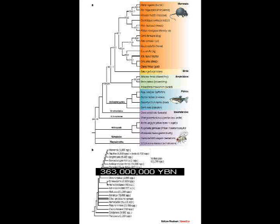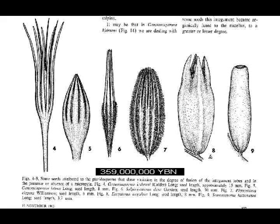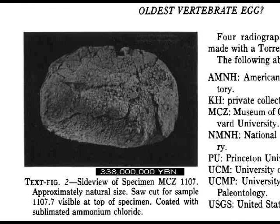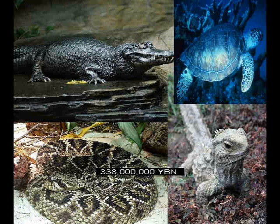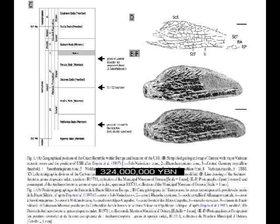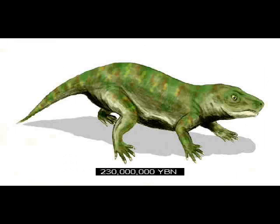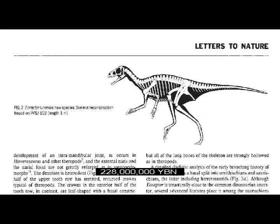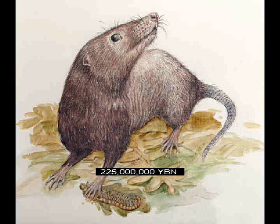Amphibians. First seed. Hard shell egg. The amniota: ancestor of reptiles, mammals, and birds. Reptiles. First flying animal: arthropod. Warm-blooded, hair-growing organism. Dinosaurs. Mammals.